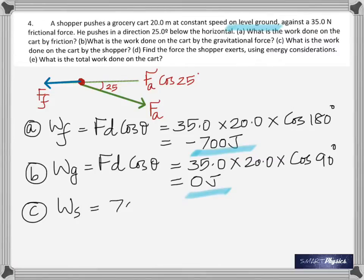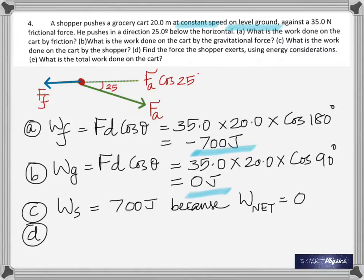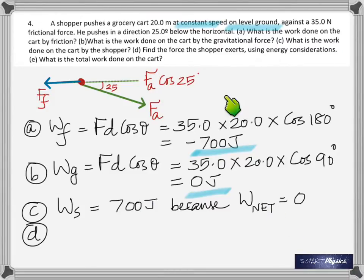The work done by the shopper is 700 joules. Since the net work must be zero — he's moving at constant speed — and friction is doing minus 700 joules, he must do exactly the opposite. Net work is zero because net force is zero.